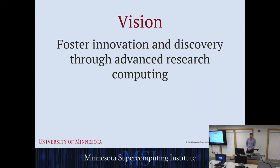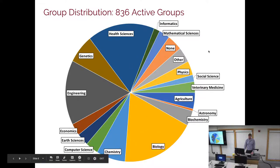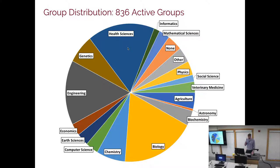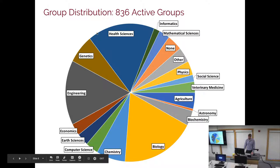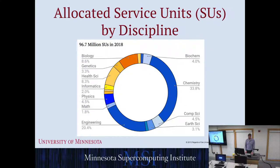Our vision is to foster innovation and discovery through advanced research and computing — to help people solve their scientific questions as efficiently as possible. We have a wide variety of users from many domains: health sciences, genetics, engineering, biology. Biology and health sciences now represent quite large slices — a newer development, as engineering and chemistry/physics were more dominant 10-15 years ago. We have users from almost every scientific department.